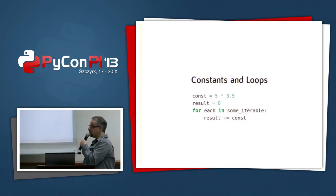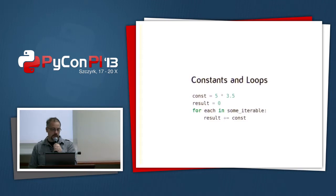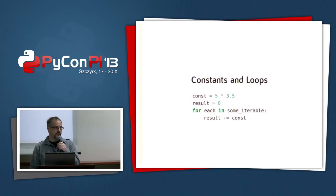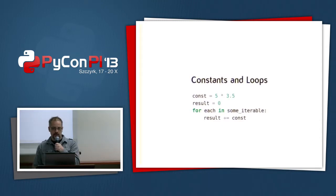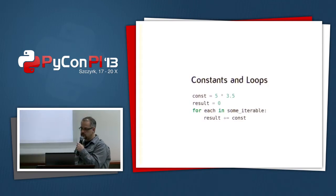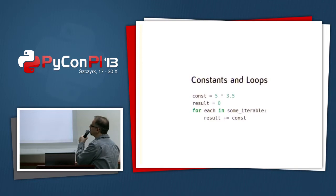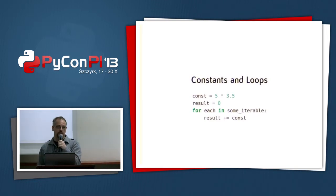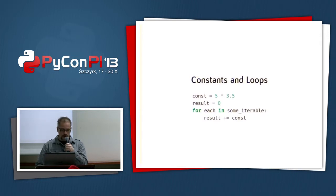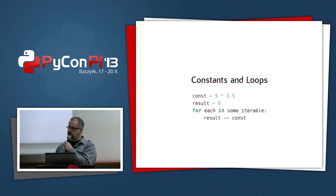Here's another pattern that was suggested to me when I asked for old patterns. I'm calculating a constant outside of the loop, which makes sense — otherwise if it's inside the loop it has to be calculated every time. But I was told that in Python 2.5, Python will recognize that this is a constant and won't calculate it every time. Let's look at that.